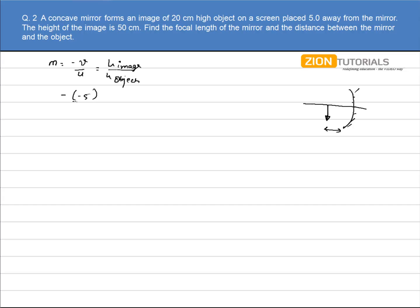u equals height of image is 50 and the height of object is 20. This height of image will be minus because it is below the principal axis.